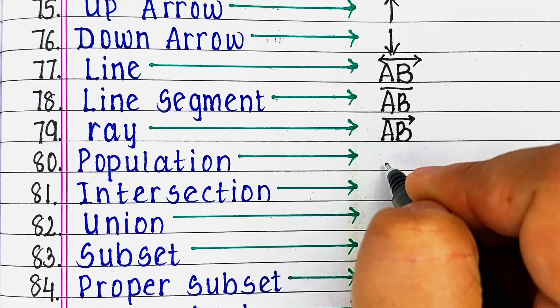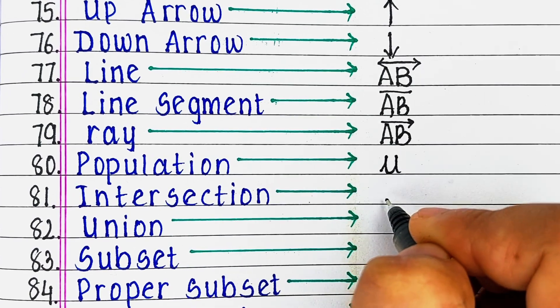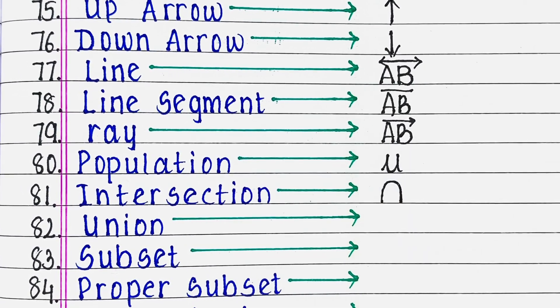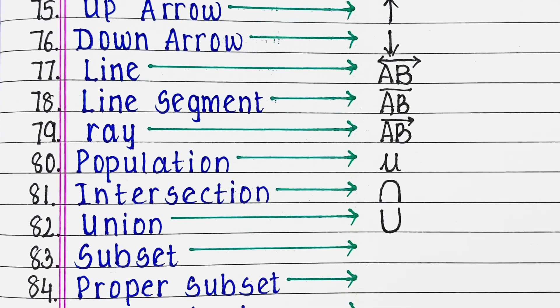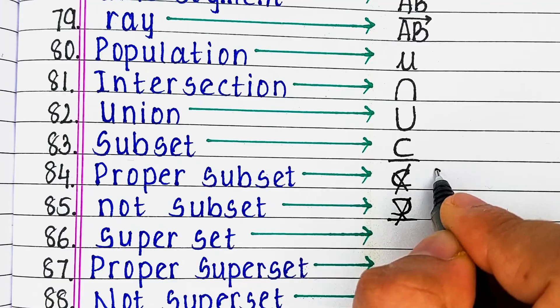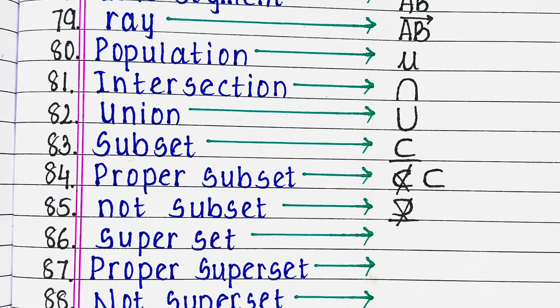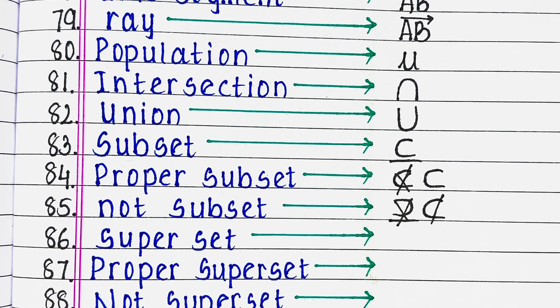Next population, next is intersection, next union, next subset, next proper subset, next is not subset.